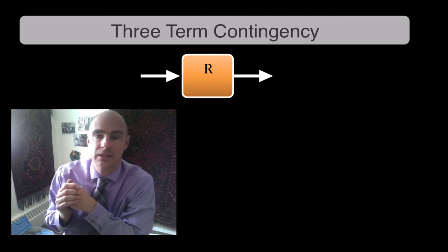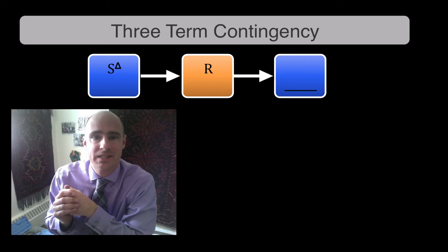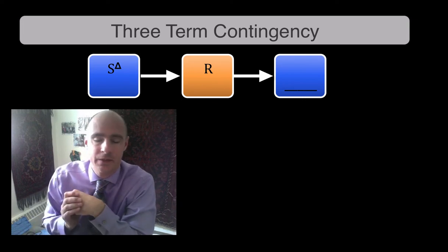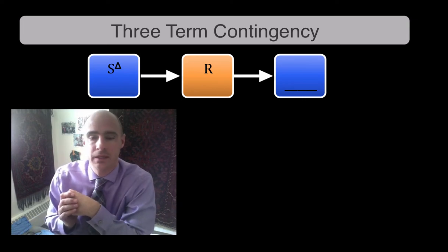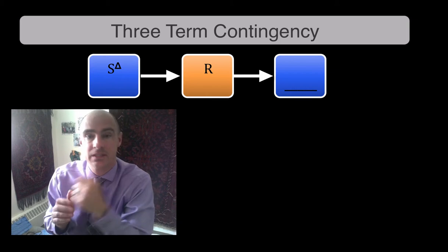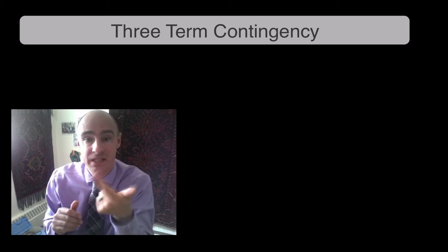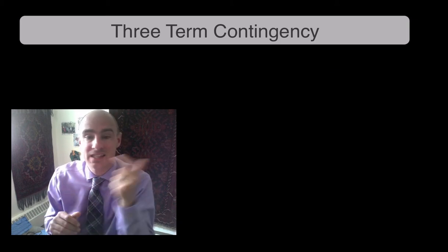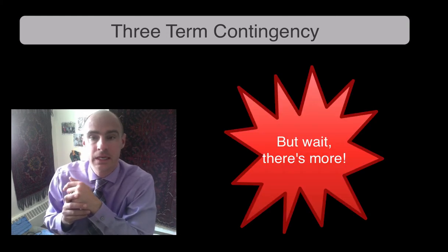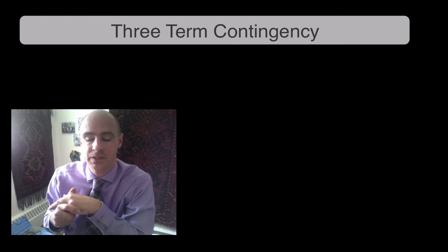You could also have this cool thing called an S-delta, which basically signals that extinction is going to happen. In other words, there are no reinforcers available. That's what an S-delta signals. S-delta signals no reinforcer. SDP signals that there's a punisher coming. SD signals that there's reinforcement available. So those are your core pieces.